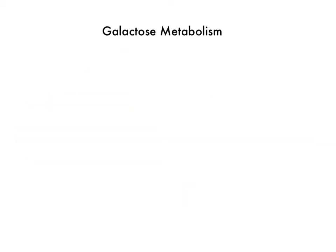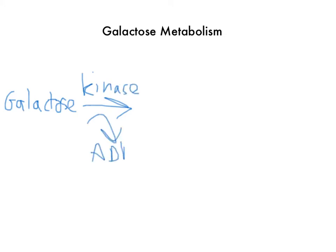Once galactose enters the blood, the cell has to be able to pick it up, trap it into the cell, and then use it for metabolism. Galactose is taken up by the cell, and the way it gets trapped is using something called galactokinase. Since it's a kinase, it uses ATP, and that creates galactose-1-phosphate, which traps it inside the cell so the cell can use it.